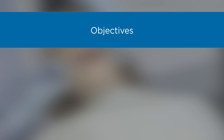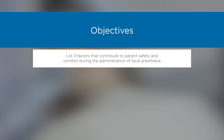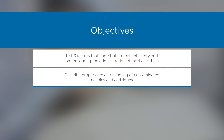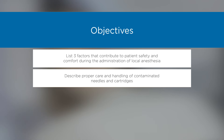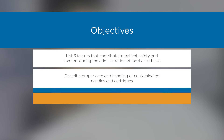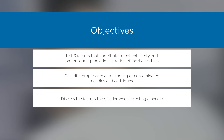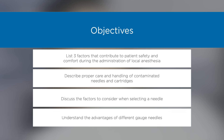Objectives: List three factors that contribute to patient safety and comfort during the administration of local anesthesia. Describe proper care and handling of contaminated needles and cartridges. Discuss the factors to consider when selecting a needle, and understand the advantages of different gauge needles.